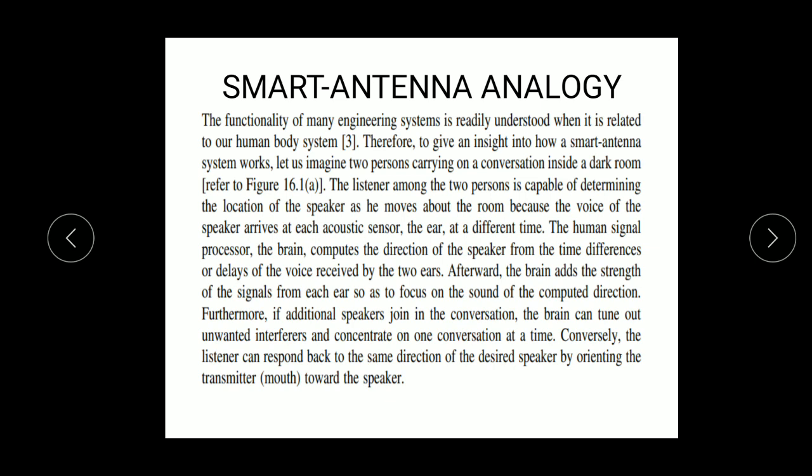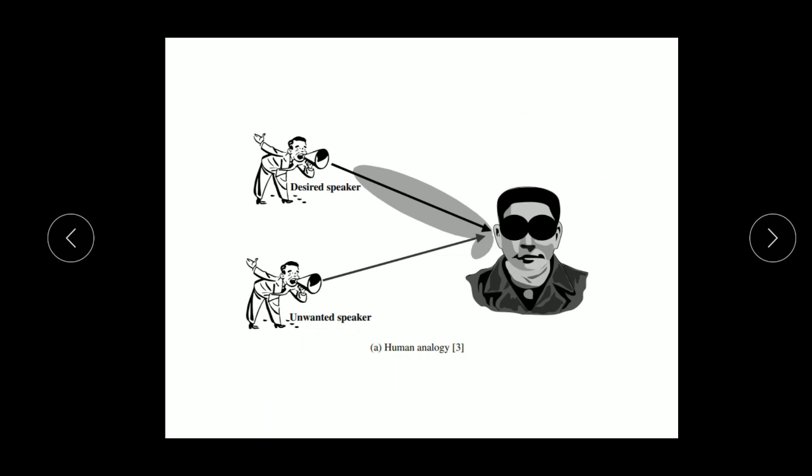Let us imagine two persons carrying on a conversation inside a dark room. In this dark room there are three persons. One person is the listener and the other two persons are speakers — one person is the desired speaker and one person is the unwanted speaker. The listener has to move toward the desired speaker and ignore the unwanted speaker.